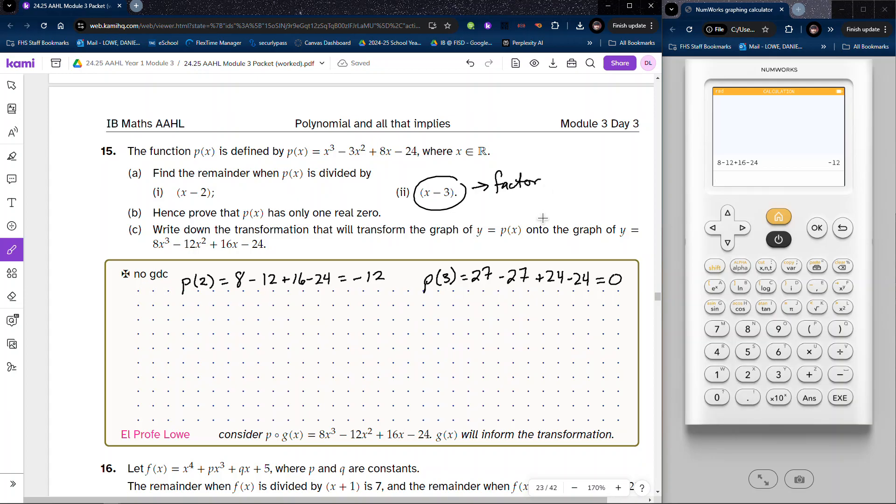So how can we use that? Because our next command term here is hence: how can we use the fact that x minus 3 is a factor to show that this cubic has only one real zero?